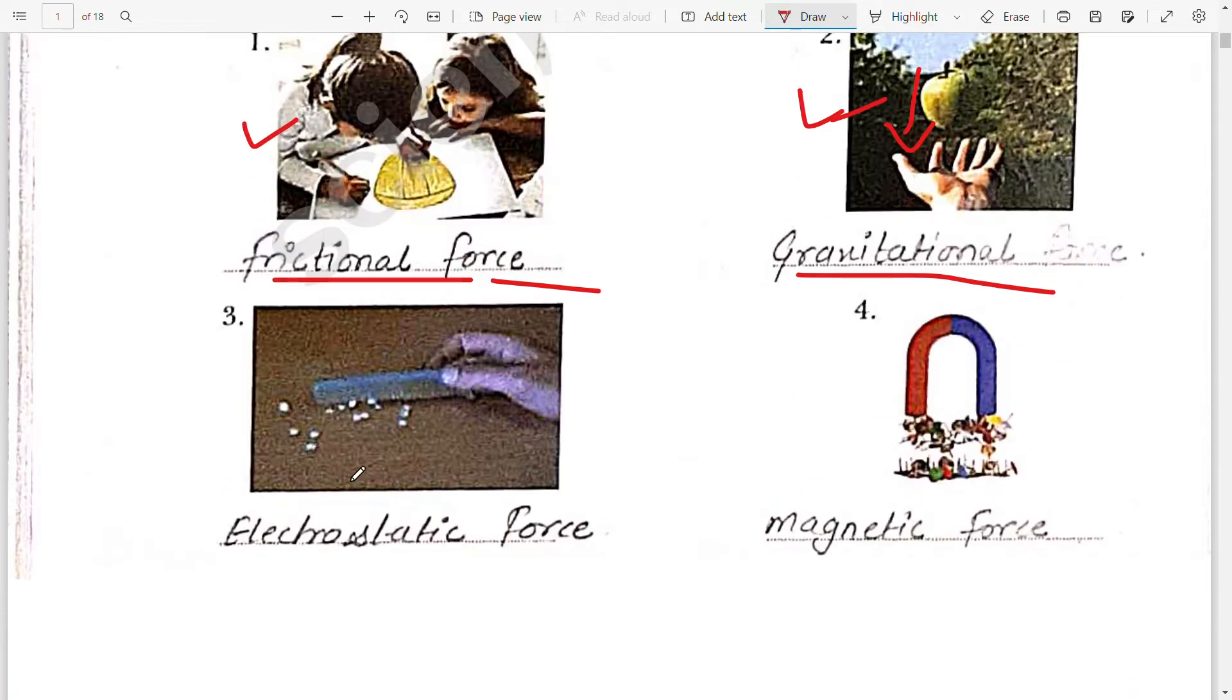Then third picture. Third picture is of electrostatic force because they are talking about the charged object, right? Fourth, you can see the magnet and some pins. So it is magnetic force.